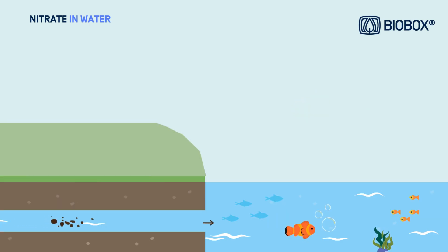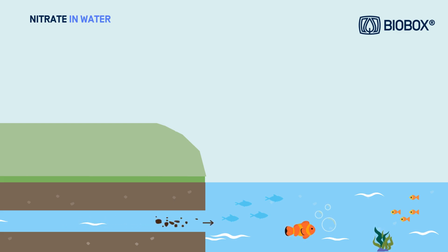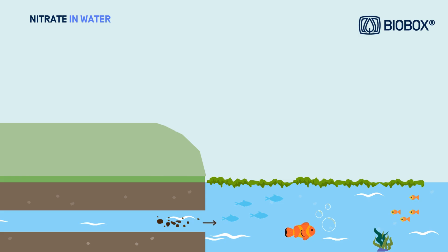Contaminated discharges loaded with nutrients reach ecosystems, causing excessive growth of organic matter. Specifically, this leads to rapid, uncontrolled algae growth that quickly covers the water surface.